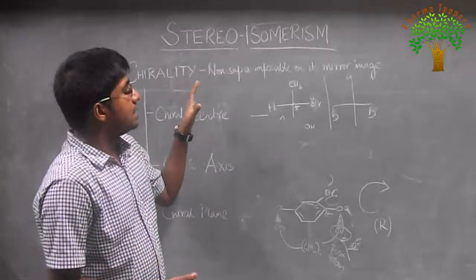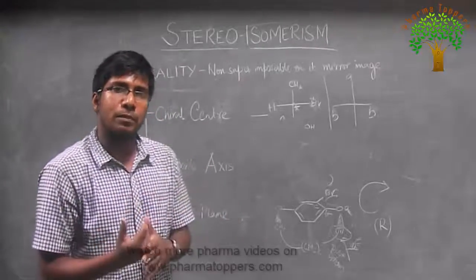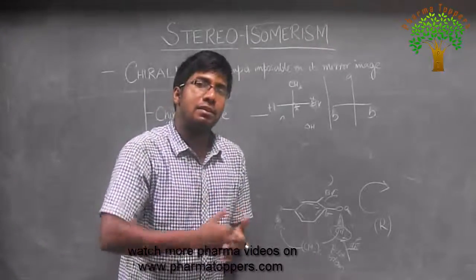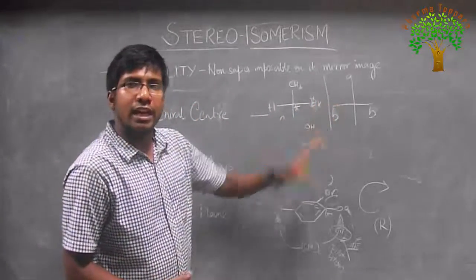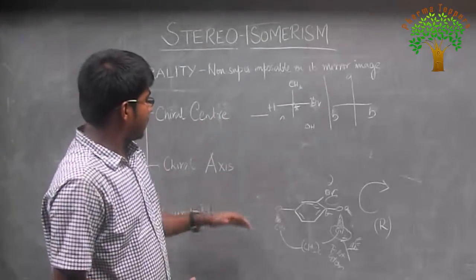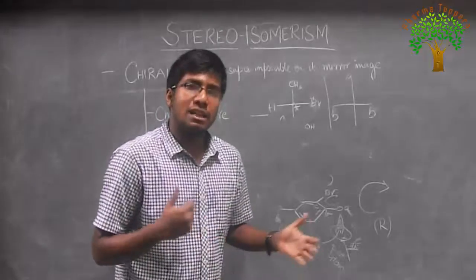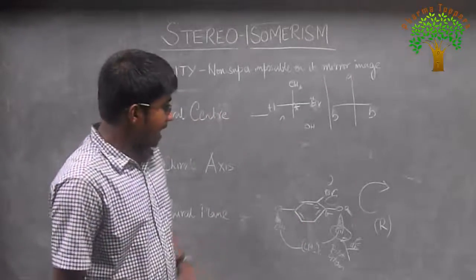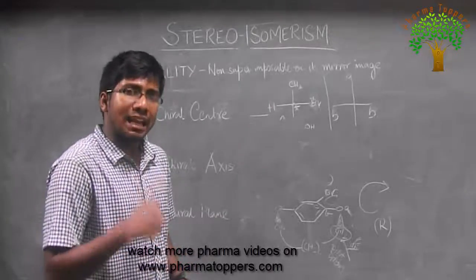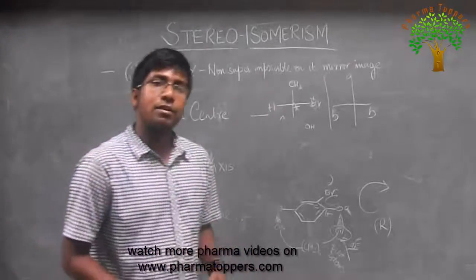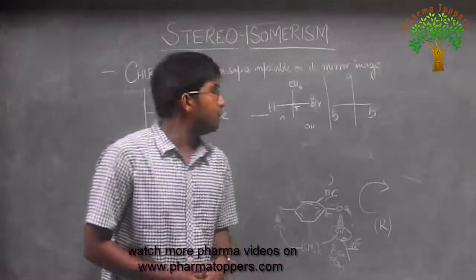In summary: chirality is the property of being non-superimposable on a mirror image. Many people wrongly think chirality can only be due to an asymmetric centre, but chirality can also arise from a chiral axis or a chiral plane. Chiral axis examples include biphenyls, allenes, and spiro compounds. Chiral plane examples include bridged aromatics, and some cyclic allenes can also exhibit chiral planes. Thank you, and stay tuned for the next video for more details.